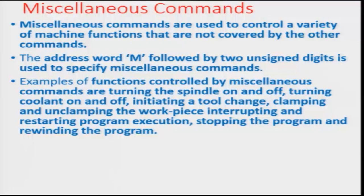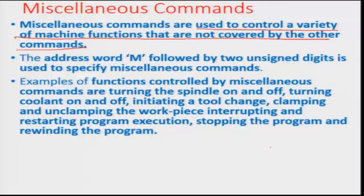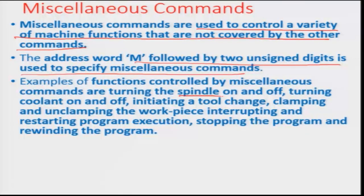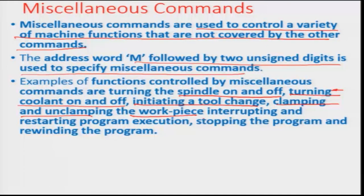Miscellaneous commands are majorly used to control a variety of machine functions not covered by the other commands. The address M followed by two unsigned digits is used to specify the miscellaneous command. Examples include spindle on and off, turning coolant on and off, initiating a tool change, and clamping or unclamping a workpiece. These are commands of some importance to the overall machining setup, although they are not directly involved in the machining process itself. They are essential for a program to be executed even if they do not directly participate.